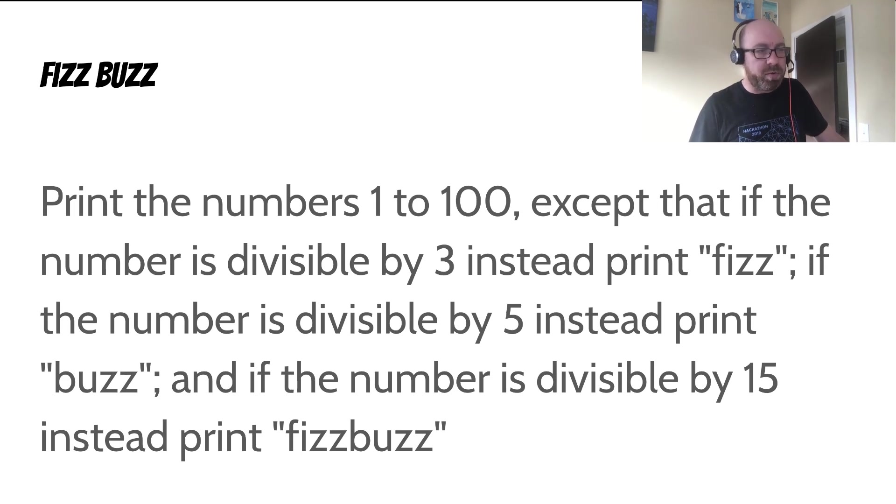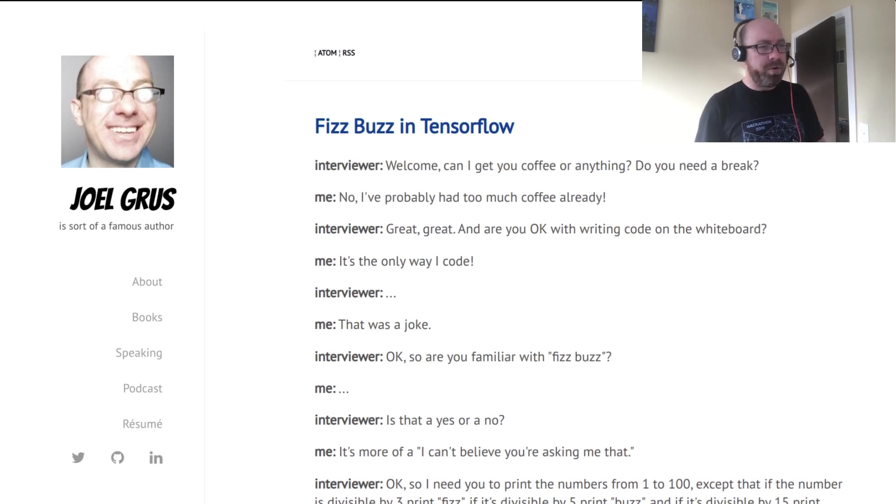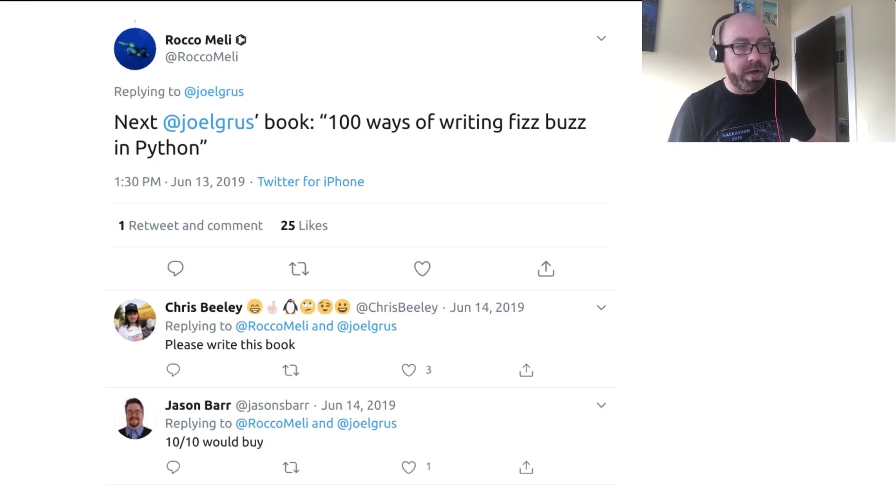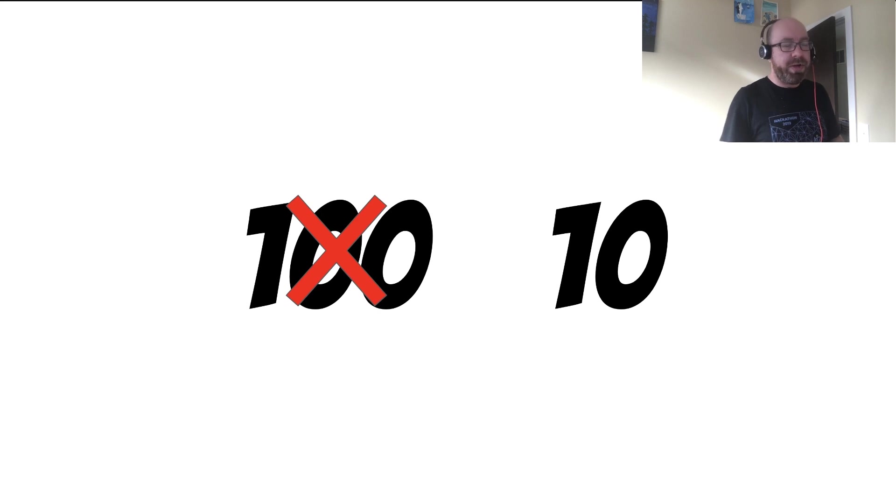It's sometimes used as a really basic litmus test for coding interviews. What happened was a few years back, I wrote a blog post called FizzBuzz in TensorFlow. It was the story of someone who was insulted at being asked FizzBuzz in an interview and solved it as a deep learning problem. This blog post was popular as far as blog posts go, and since then I've been associated with FizzBuzz in the mind of the public. Sometimes people tweet at me to write books about it. And then I got quarantined, so I did. Now that tweet asked for 100 ways. 100 is a lot, but I was able to come up with 10.